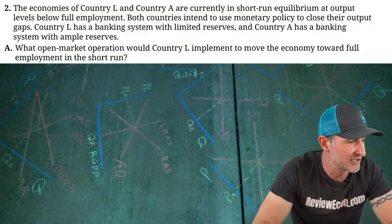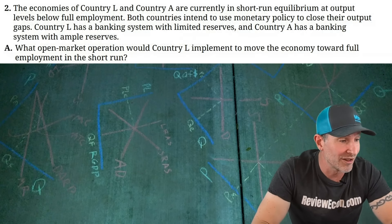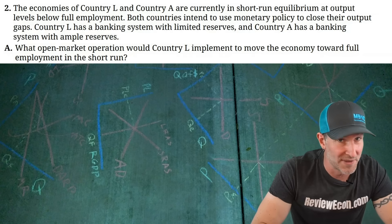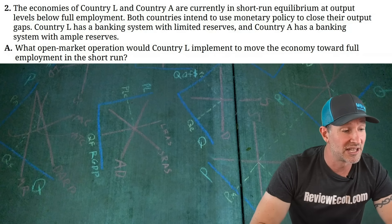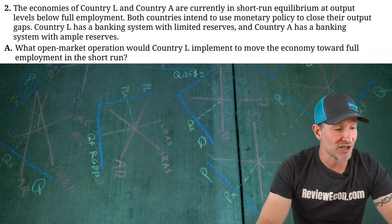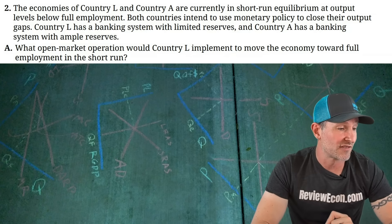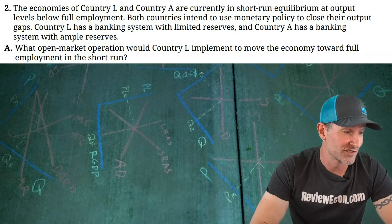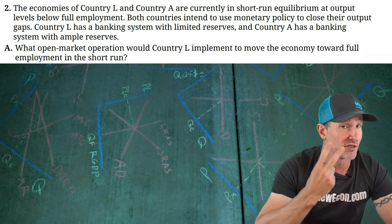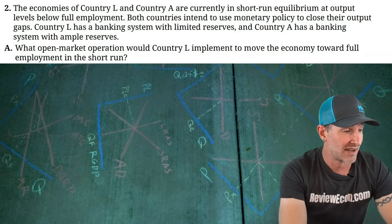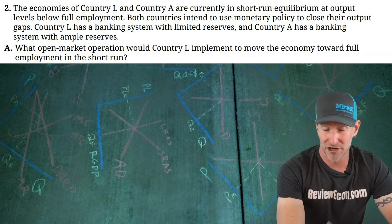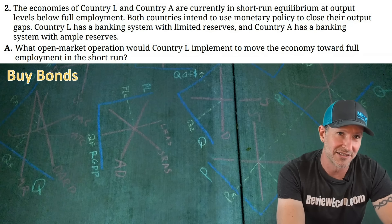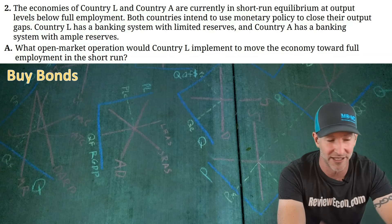Moving on to question two. We have Country L and Country A, both in short-run equilibrium with output below full employment — meaning they are in recessionary gaps. Both use monetary policy, but Country L has limited reserves. For Part A, Country L's central bank should buy bonds as its open market operation. This will increase the money supply, decrease the interest rate, and cause an increase in gross investment, shifting AD to the right and restoring full employment.